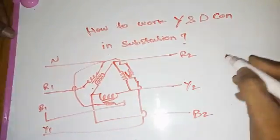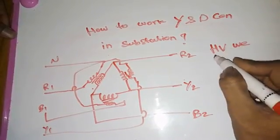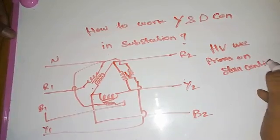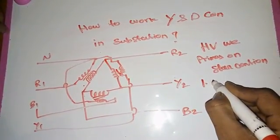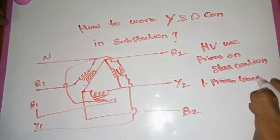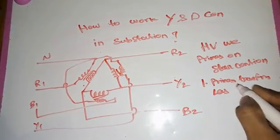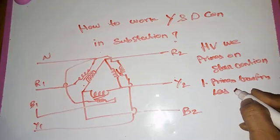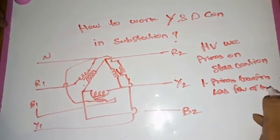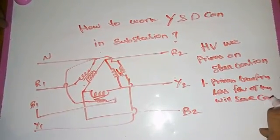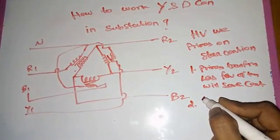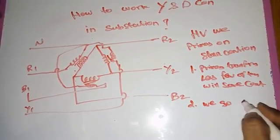Now, why do we choose star-delta in an HV system? In HV systems, we choose a primary star connection. The first main reason is that the primary transformer winding is fewer turns — fewer turns are needed. This saves cost, making it economically the best choice.